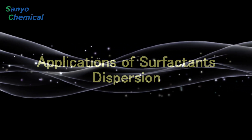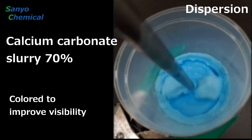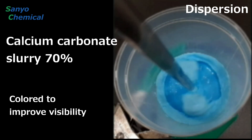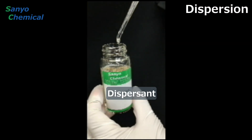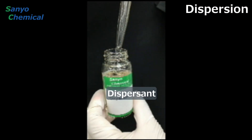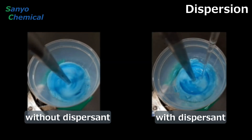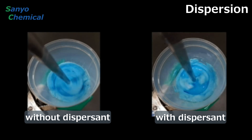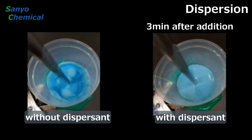The third feature is dispersion. Mixing substances like inorganic pigment with water is quite a challenge. Here too surfactants, in this case dispersants, can come to play. Without a dispersant, the inorganic pigment will not mix evenly no matter how long or how quickly it is spun. By adding a dispersant, the inorganic pigment mixes evenly and effortlessly with water to create a slurry.